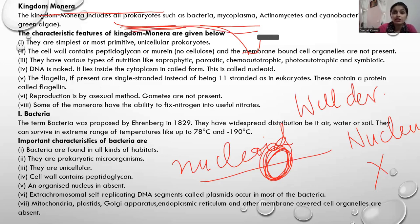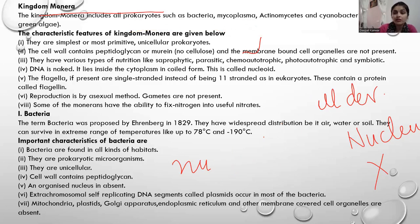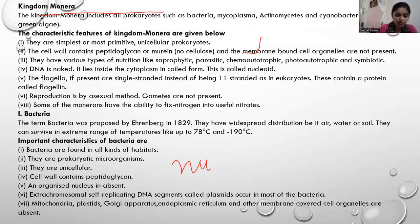These include bacteria, mycoplasm, actinomycetes, and cyanobacteria — all of which are prokaryotes that have not developed a well-developed nucleus. Now, Monera has a few characteristic features. What are these characteristic features?